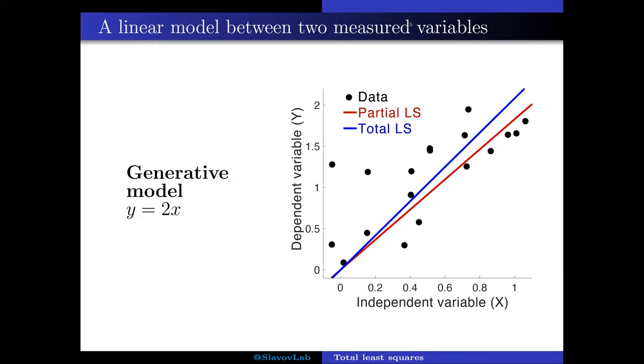The data points, again, are the solid circles, and you can see that if we fit the partial least squares, we get a line with smaller slope than if we fit the total least squares.